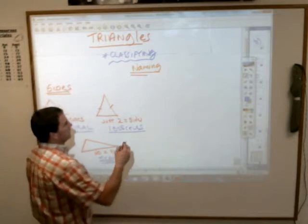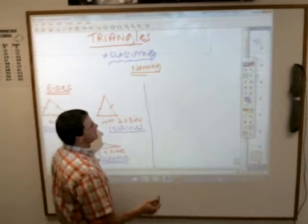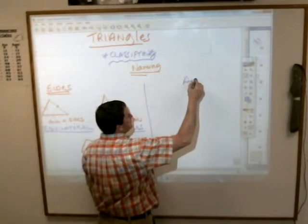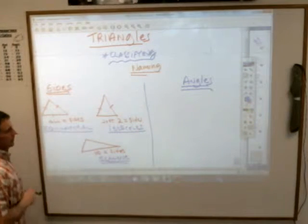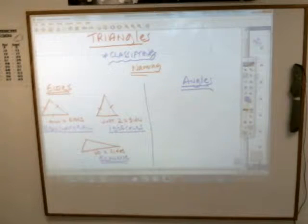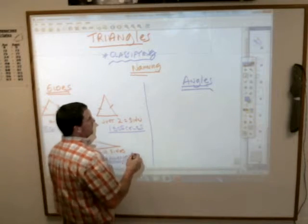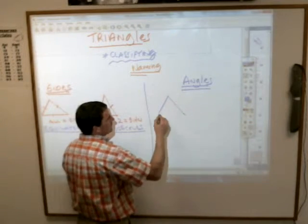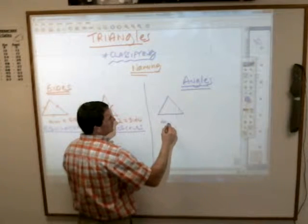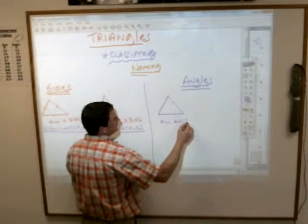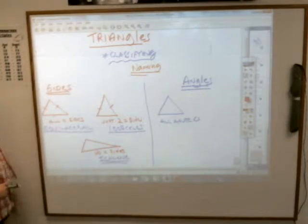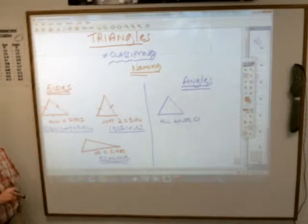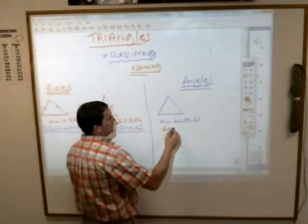The other way that we can classify triangles is by their angles. Again, there are three choices when we classify them by their angles. Either they have all acute angles, in which case the name of the triangle is — it's going to be tough, Holly. Very acute? Yeah — that makes it an acute triangle.